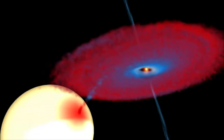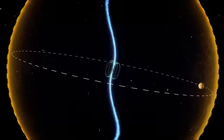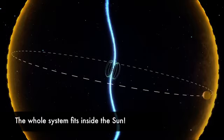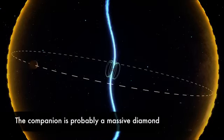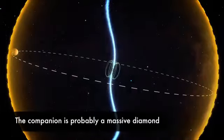The evolutionary history and amazing density of the planet all suggest it is comprised of carbon, i.e. a massive diamond orbiting a neutron star every two hours in an orbit so tight it would fit inside our own sun.